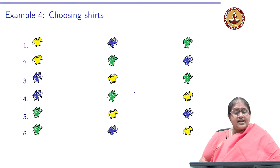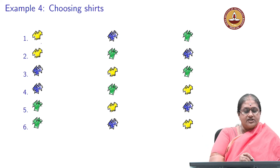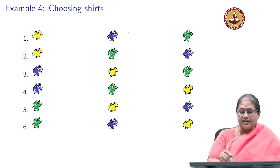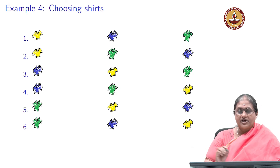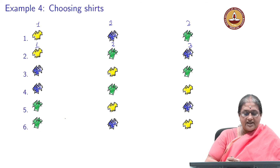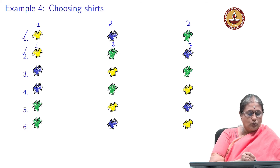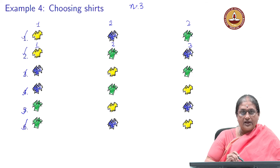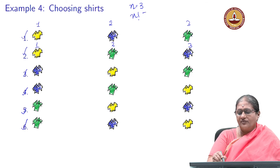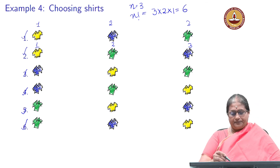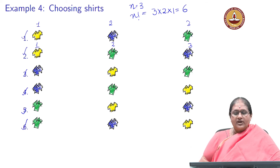Let us go back to look at an example where I have 3 people wearing a yellow t-shirt, a blue t-shirt, and a green t-shirt, and we look at the order of finish. The first order could be yellow first, blue second, green third; the second is yellow first, green second, blue third; and so on. You can see the total number of ways is 6. With n equal to 3 distinct objects, n factorial is 3 × 2 × 1 = 6, confirming the total number of arrangements is n! = 6.